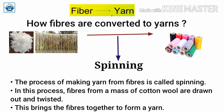So spinning is a process by which yarn is made from fiber. In this process, fibers from a mass of cotton wool are drawn out and twisted. As we already saw in the activity, we pinch out fibers from the mass and twist them continuously. This brings the fibers together to form a yarn.